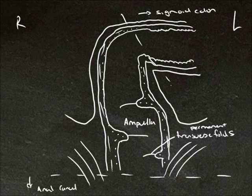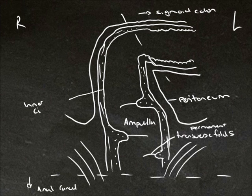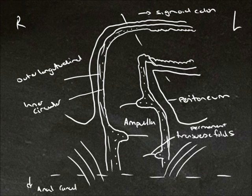Here we have the peritoneum and we can see it folding away to form the retrovesicular or retrouterine pouch. We can see the inner circular and outer longitudinal muscle which surround all of the tubes in the digestive system.